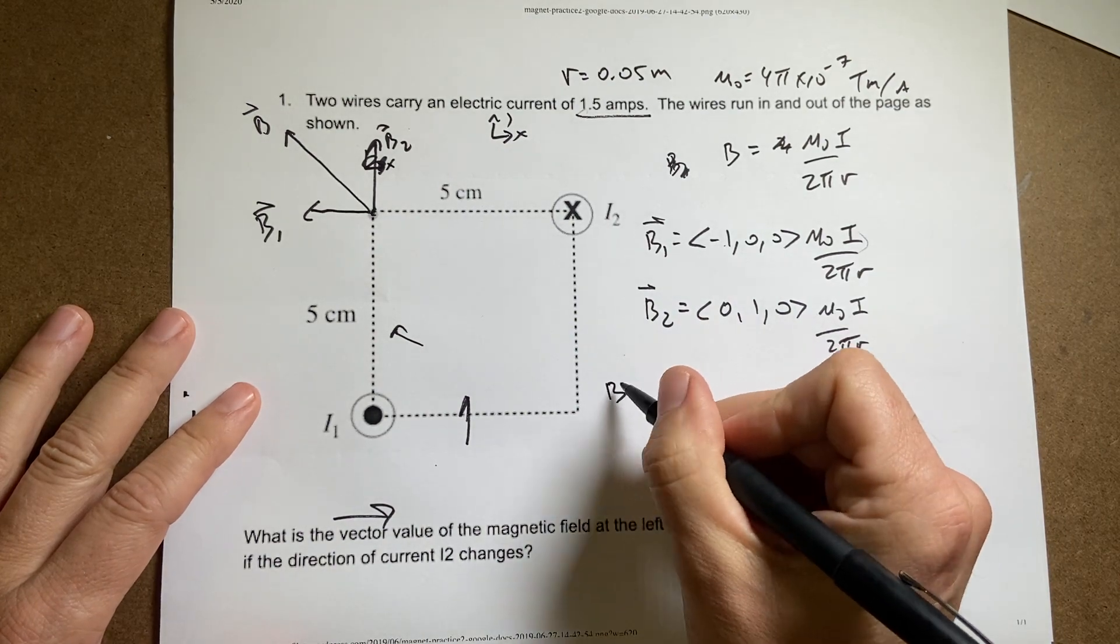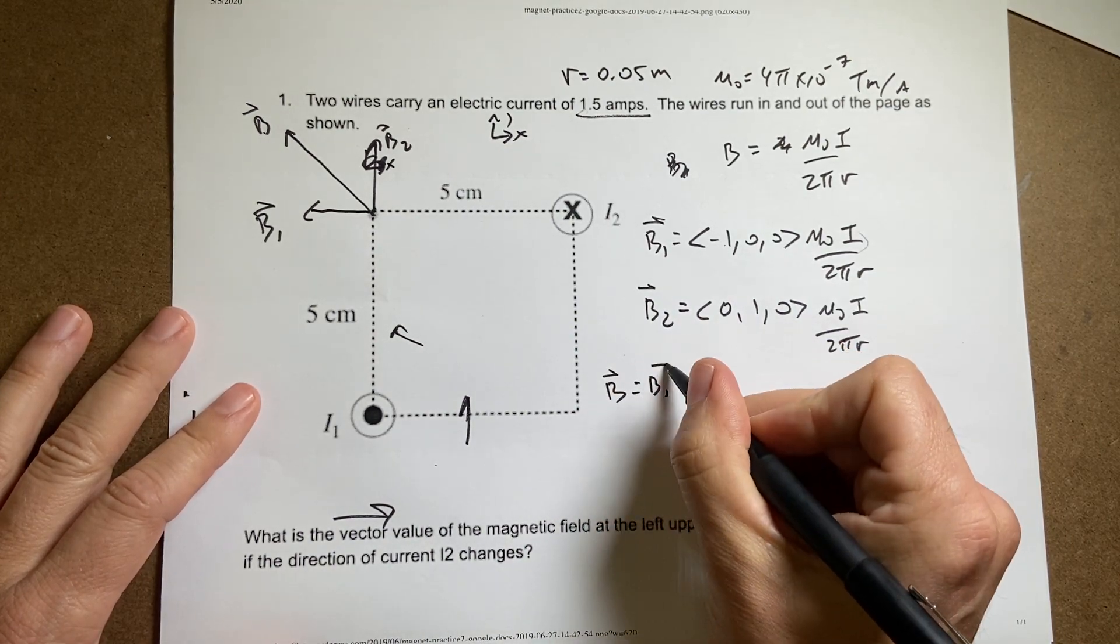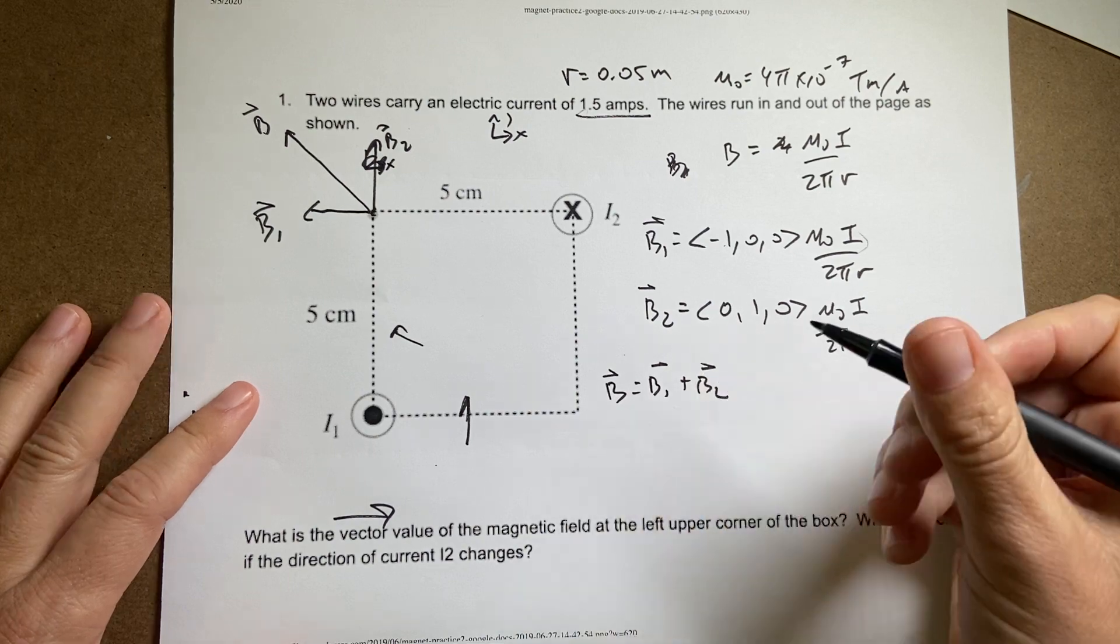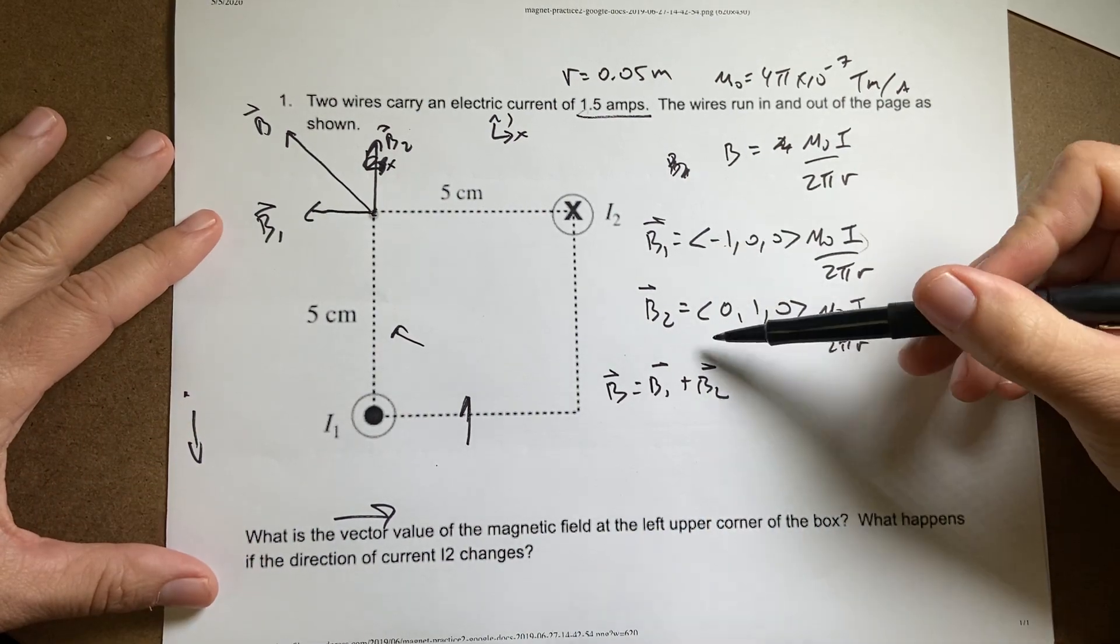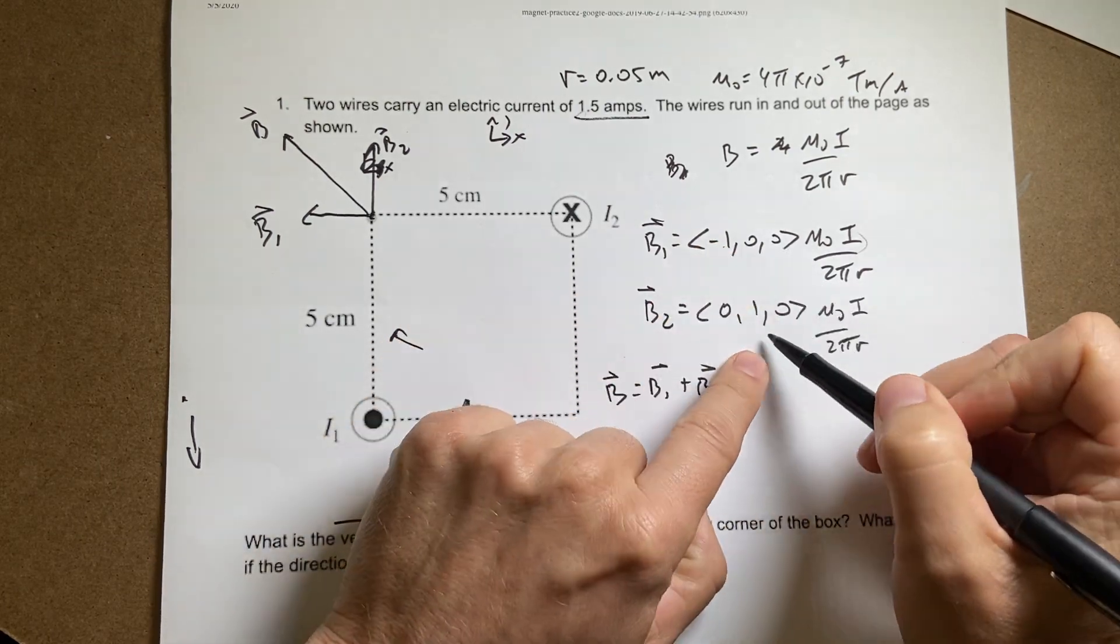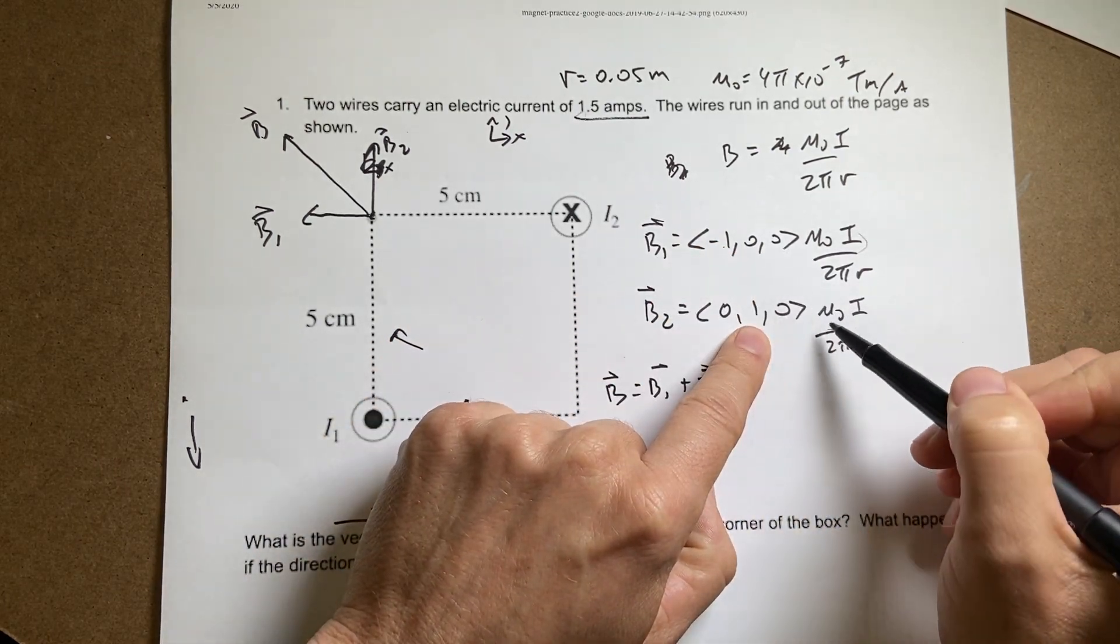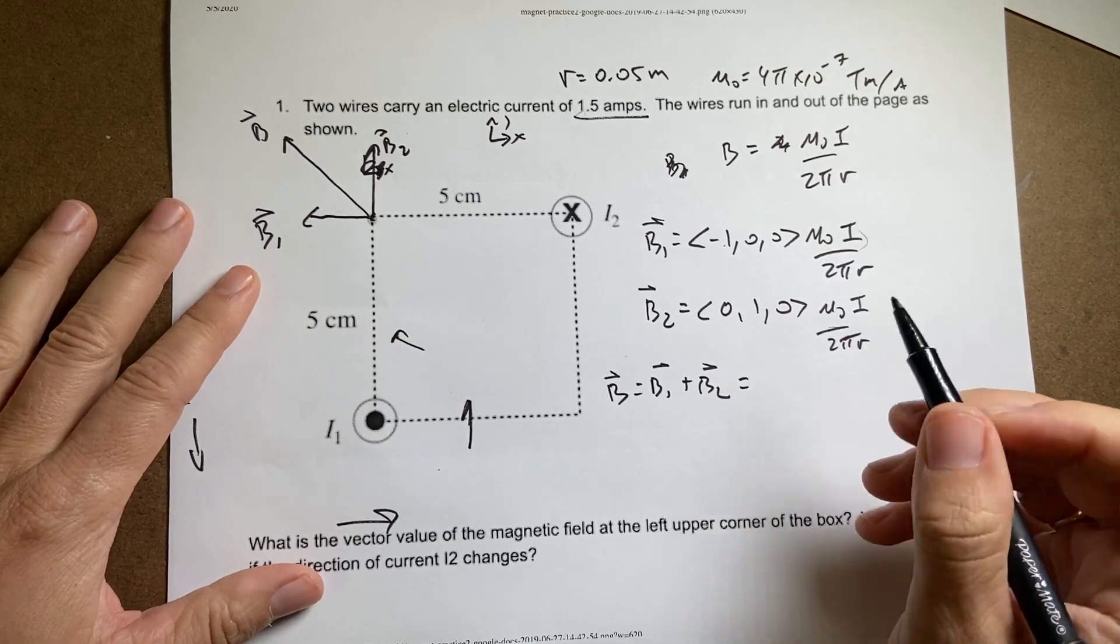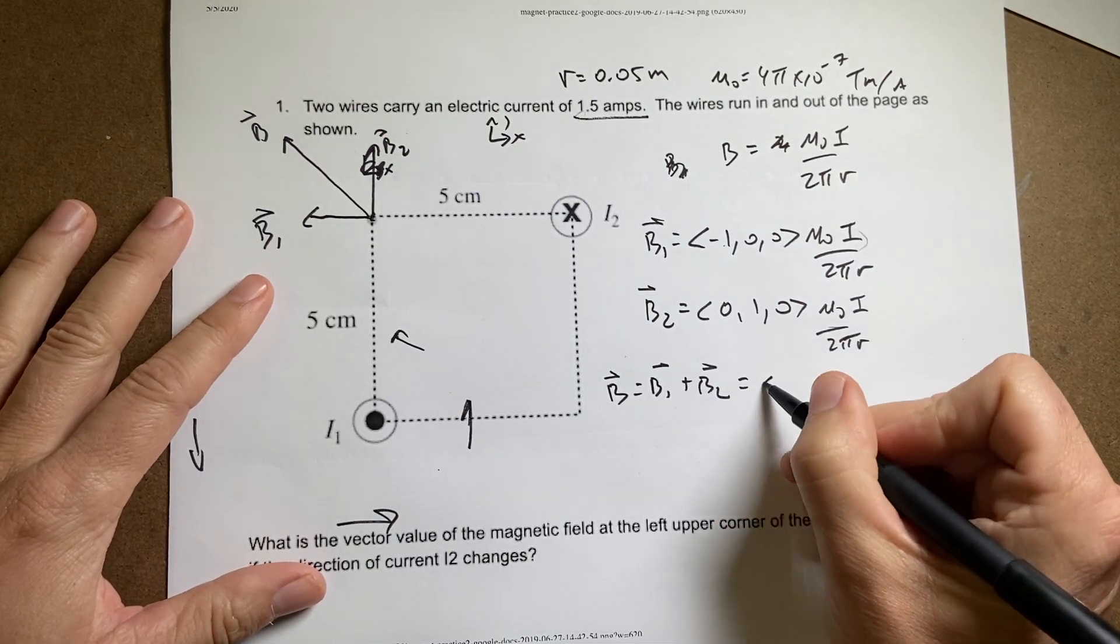And I can add those two vectors, B equals B1 plus B2. Remember when I add vectors, I add the x components, which is going to be easy. It's just going to be this stuff, because this has no x component. And then I add the y components, which is going to be this. So if I do that, which I did, I actually get this.